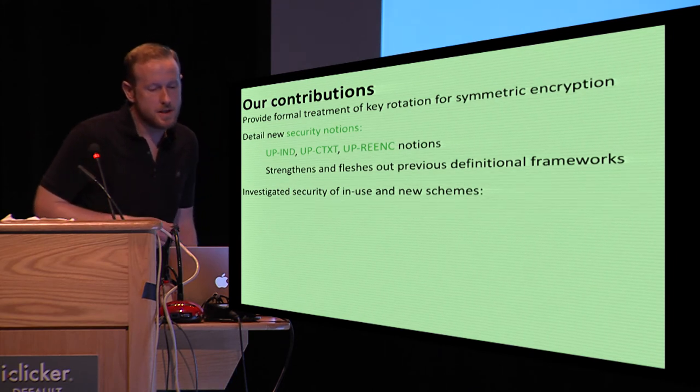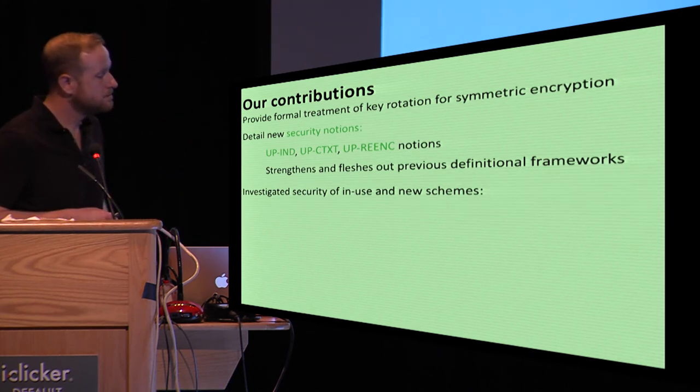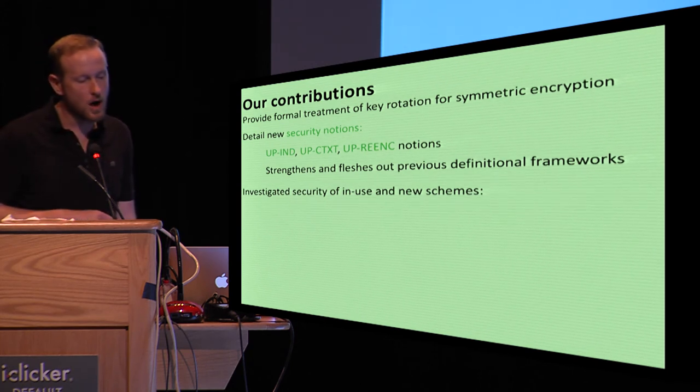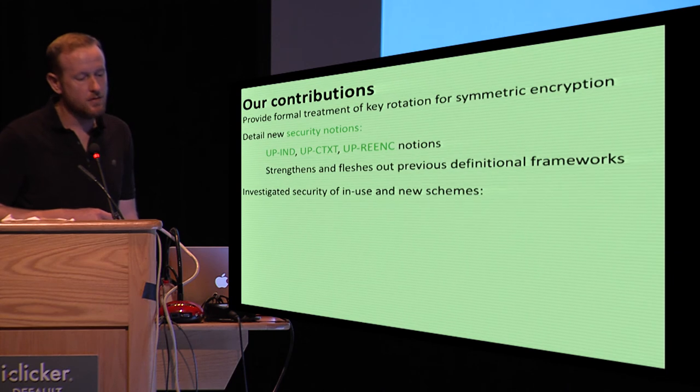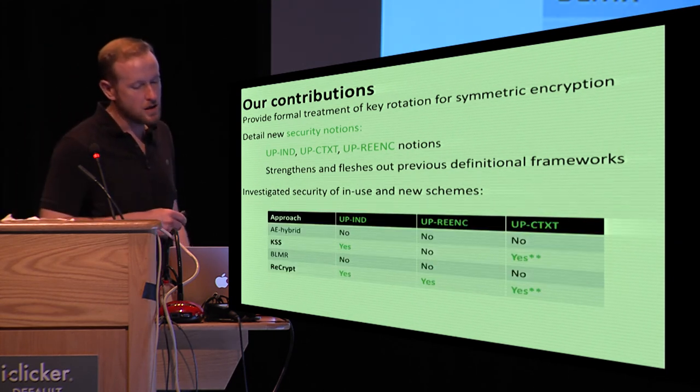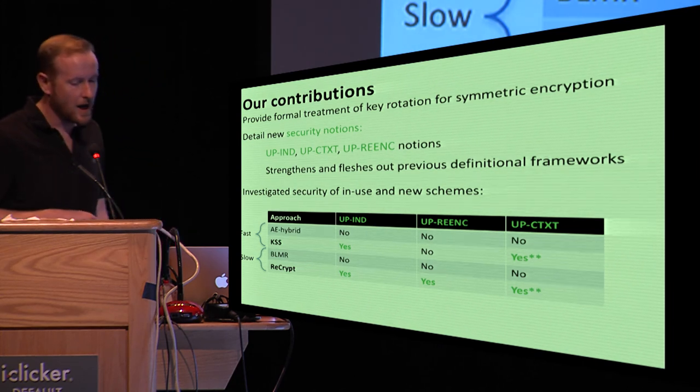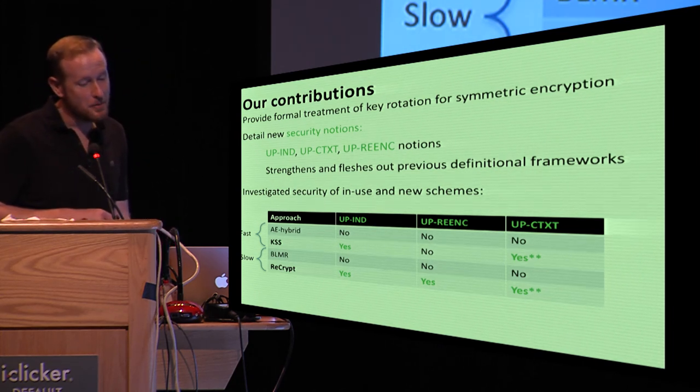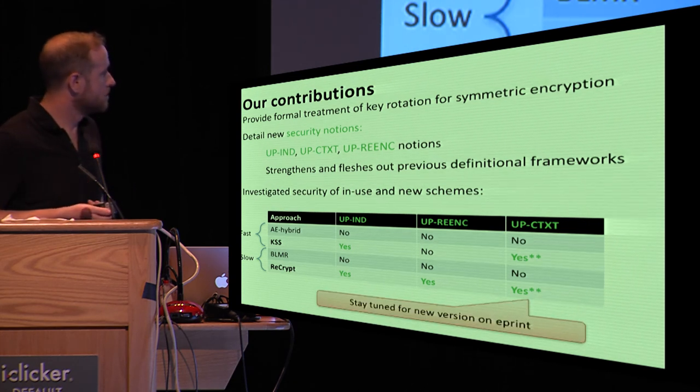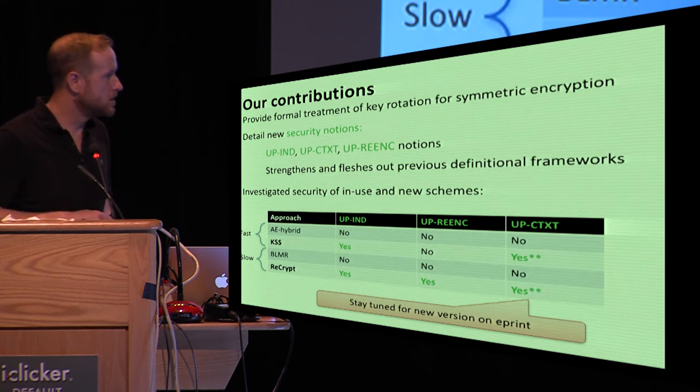Okay. So to summarize, we provided a formal treatment in depth of key rotation for symmetric encryption. We introduced a bunch of new security notions that strengthen on the prior work. And investigated these using a bunch of new and old schemes. And the high-level takeaways, those are fast and the other ones are slow. And finally, we have this embarrassing bug in our ciphertext proofs. And so please stay tuned for a fix to that, which we'll be posting shortly. Thank you very much.